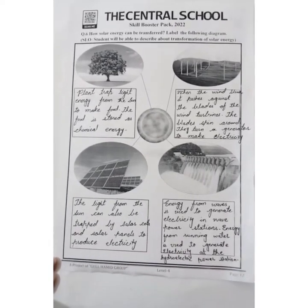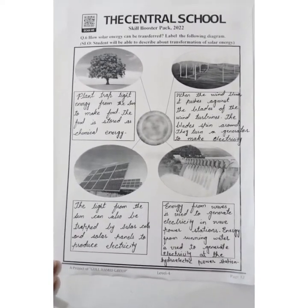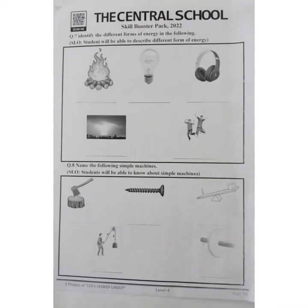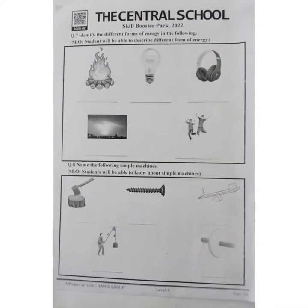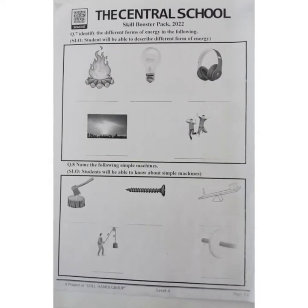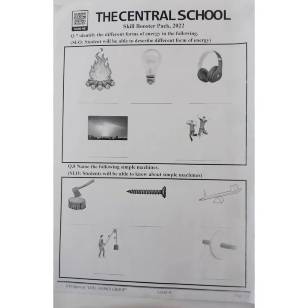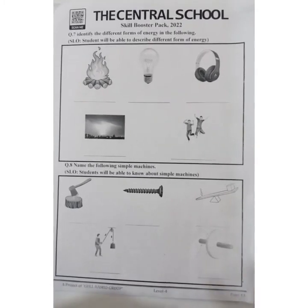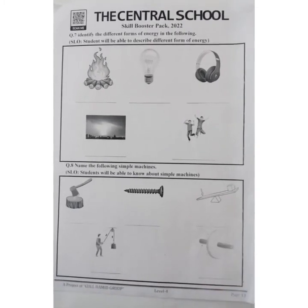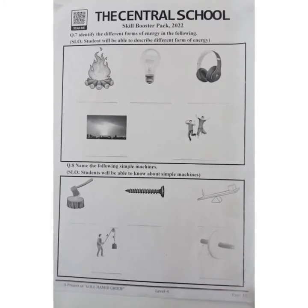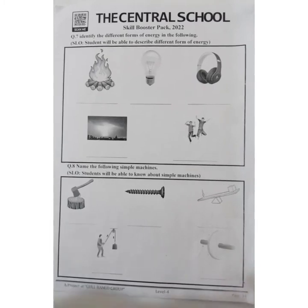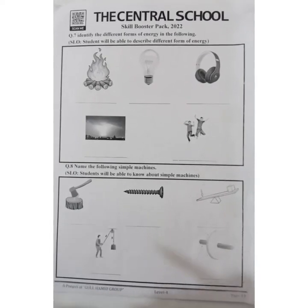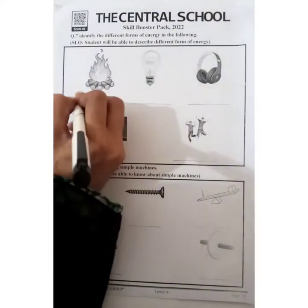Now open up page number 13. We will move to question number 7. Question number 7 is: identify the different forms of energy in the following. Here we have the diagram of fire and it gives us heat. So write here heat energy.